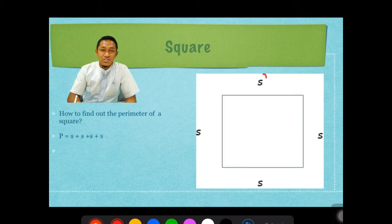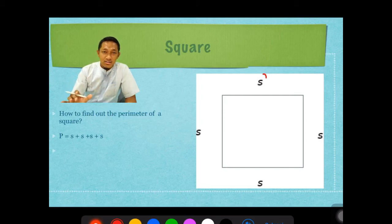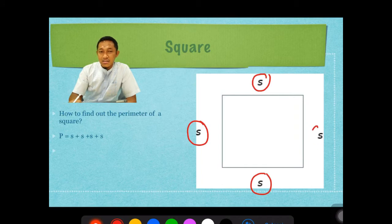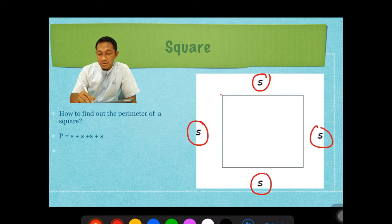But today, we will talk about the perimeter of this one. What picture is this? Yeah, this is square.